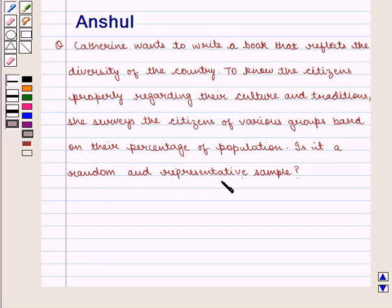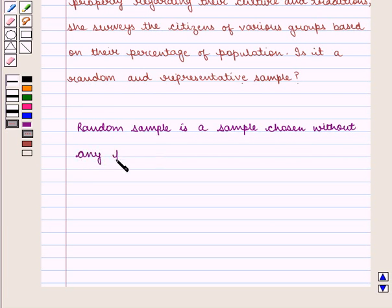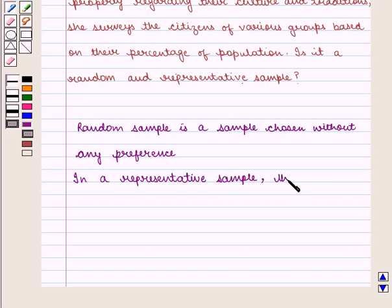We know that random sample is a sample chosen without any preference. In a representative sample, the people or items chosen accurately reflect the group as a whole.